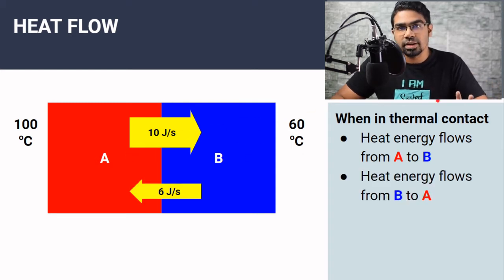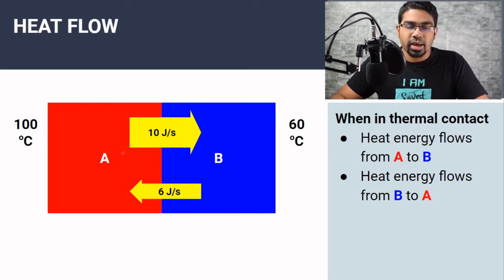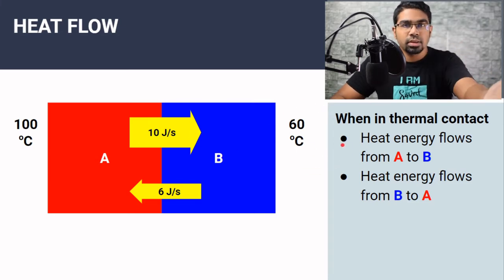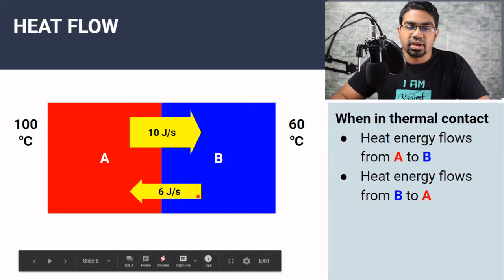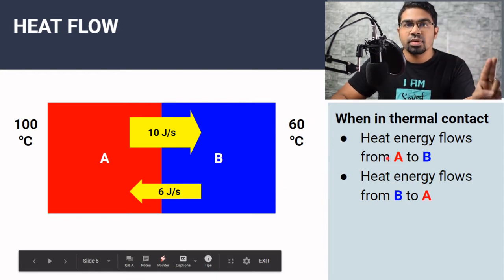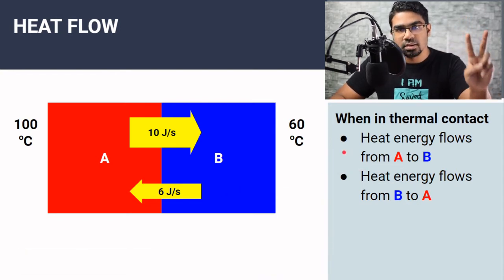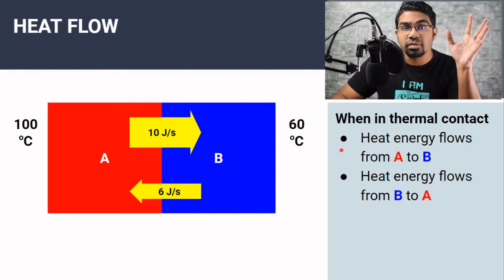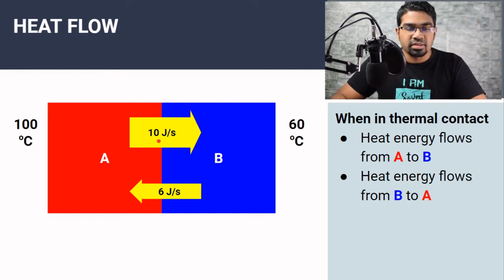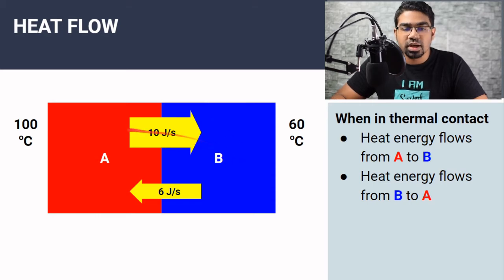But heat also flows from B to A — this is the part that we most of the time overlook. B transfers heat to A at a lower rate because it is at a lower temperature. It does supply heat energy to A, but at a lower rate. So let's take that rate at 6 joules per second. Always remember: heat will always flow two ways — from the hot object to the cold object, and from the cold object to the hot object, but at different rates.